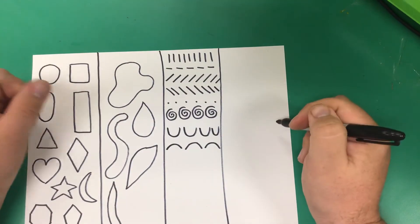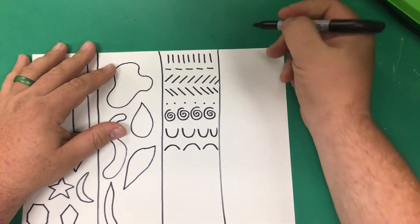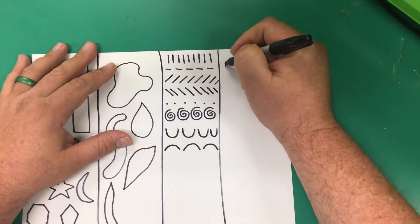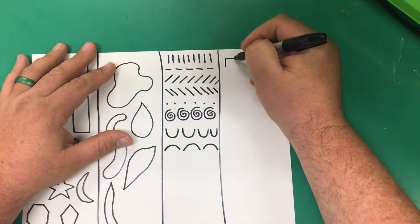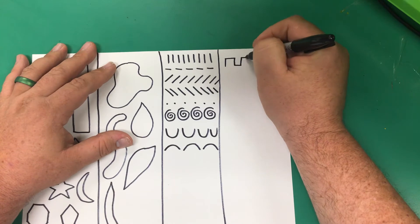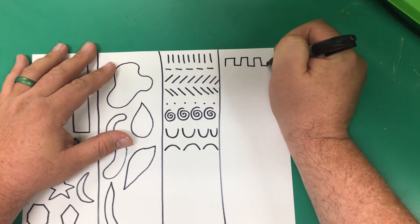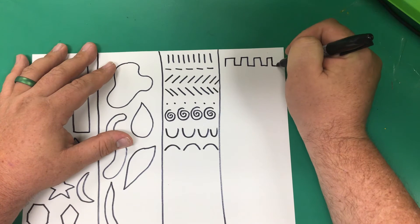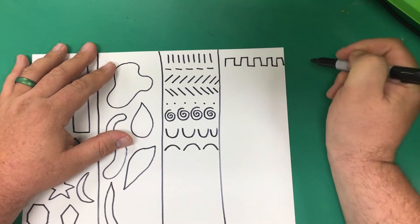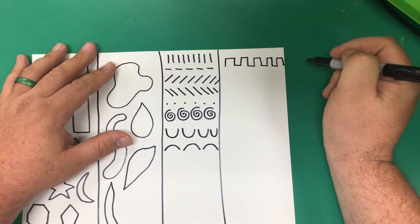Now the last column we're going to do is going to be a combination. So we're going to first take our vertical and horizontal lines and combine them together. This line is often used on castles.